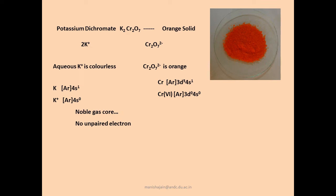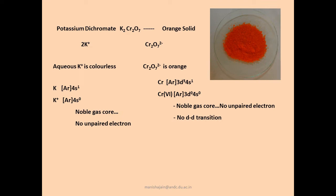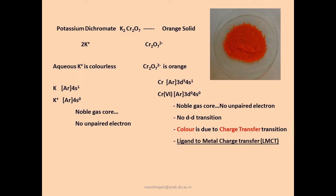With no unpaired electrons — similar to the potassium ion — dichromate should have been colorless, but that is not the case. There is no d-d transition possible here since there are no d-electrons. The color in this anion is due to charge transfer transitions — specifically ligand to metal charge transfer (LMCT). These transitions normally occur in the visible region for such brightly colored compounds.